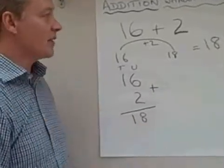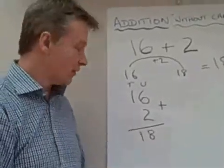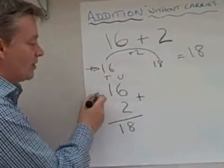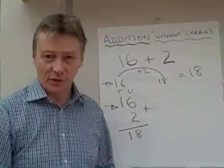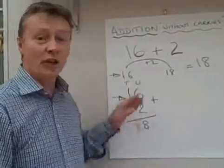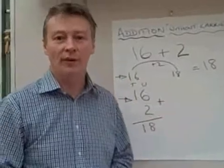So to add 16 plus 2, you've got two methods. The first one is the number line, and the second one is the formal method. It's up to you which one you choose, but try to work very hard at making sure that you know whichever method very, very well.